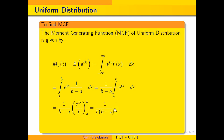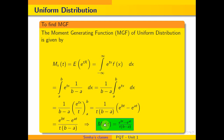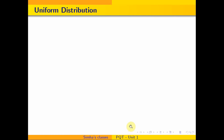Substituting the limits, we get e^(bt) minus e^(at). So the moment generating function of uniform distribution is (e^(bt) − e^(at)) divided by t(b − a).